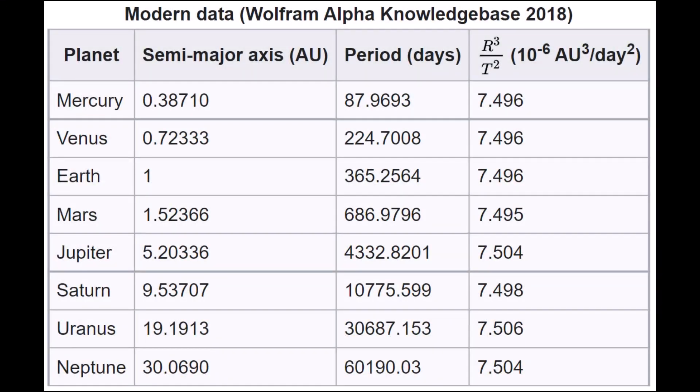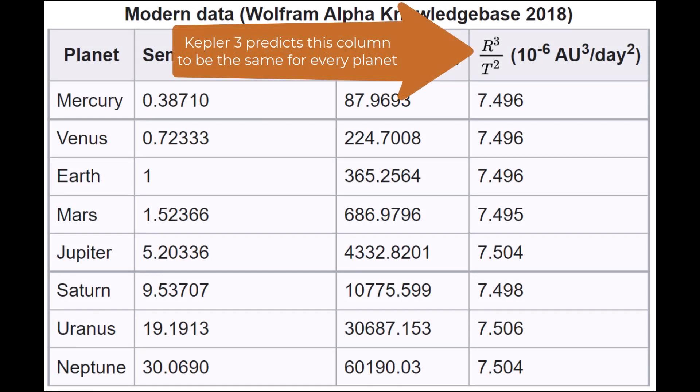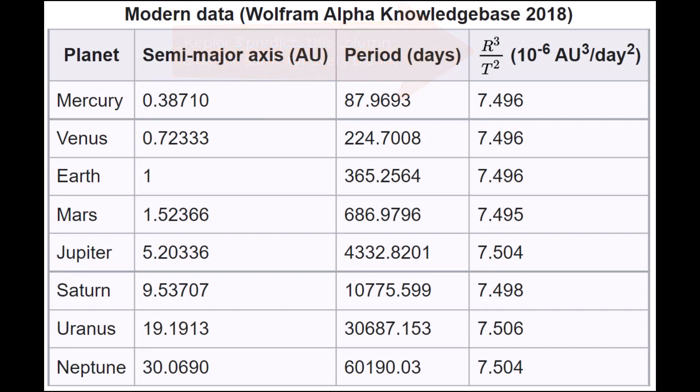Here's a list of the values of some of the planets where the constant is evaluated, and you can see that each planet gives a similar value, which works as empirical evidence in support of Kepler's third law.